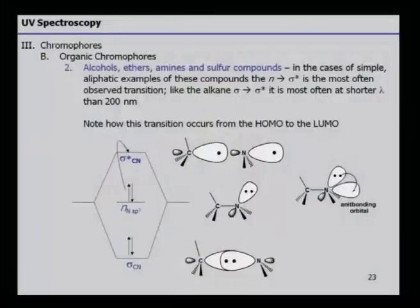From the HOMO-LUMO point of view, only transitions which are allowed are from n to sigma* and from sigma to n. That is how the pictorial molecular orbital determination can be done. The anti-bonding orbitals are also described — whether a transition will fall above 200 nm or not can be understood easily.